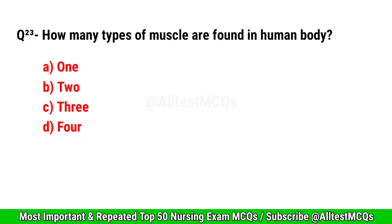Question No. 23. How many types of muscle are found in the human body? Right option is C. 3.